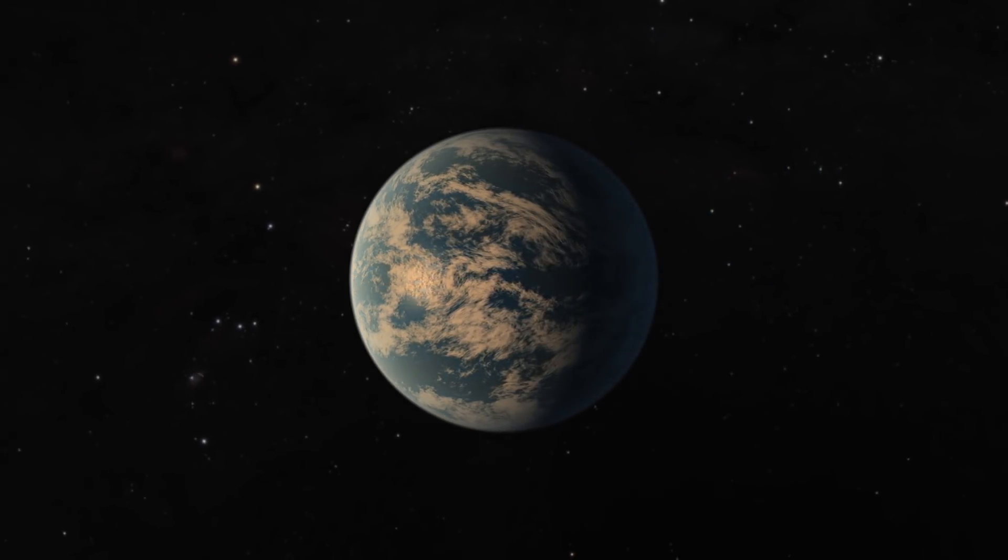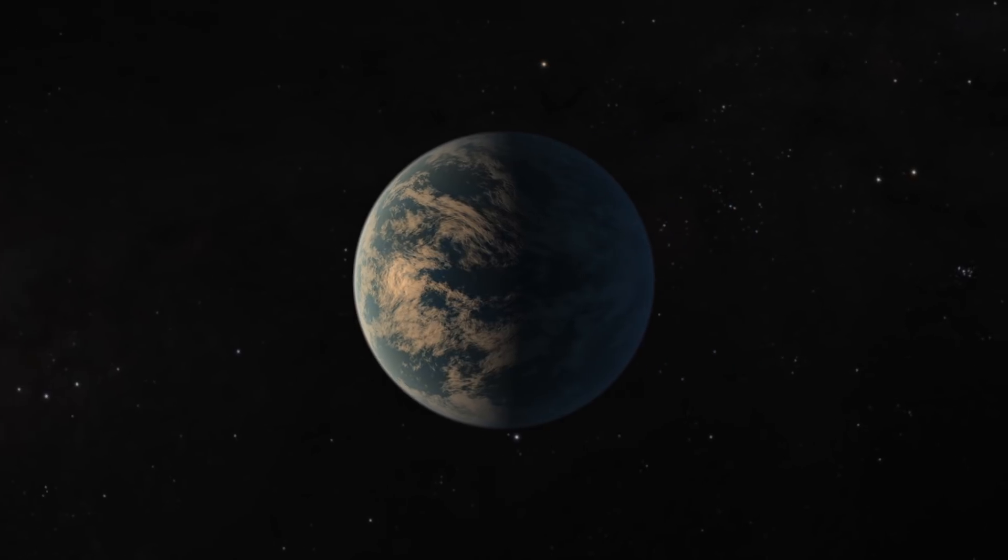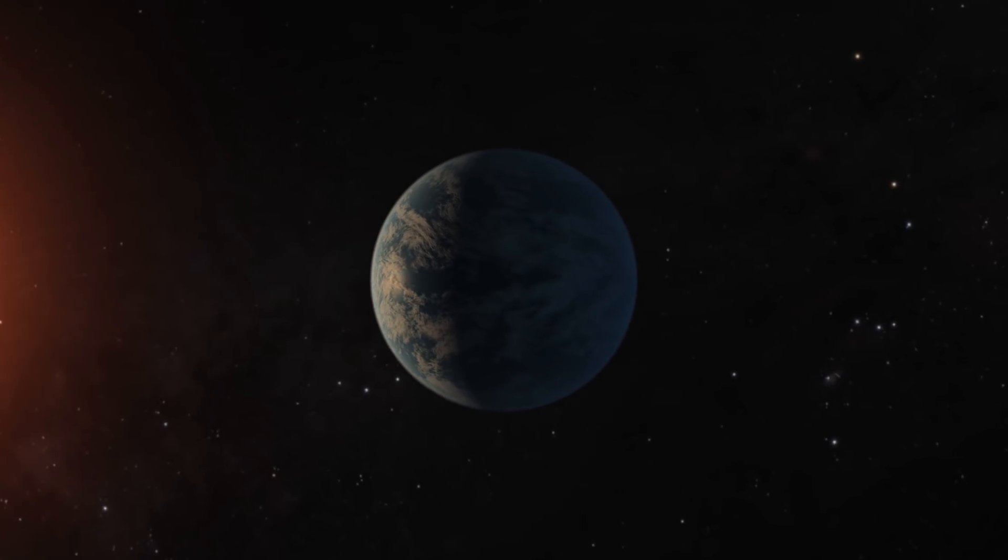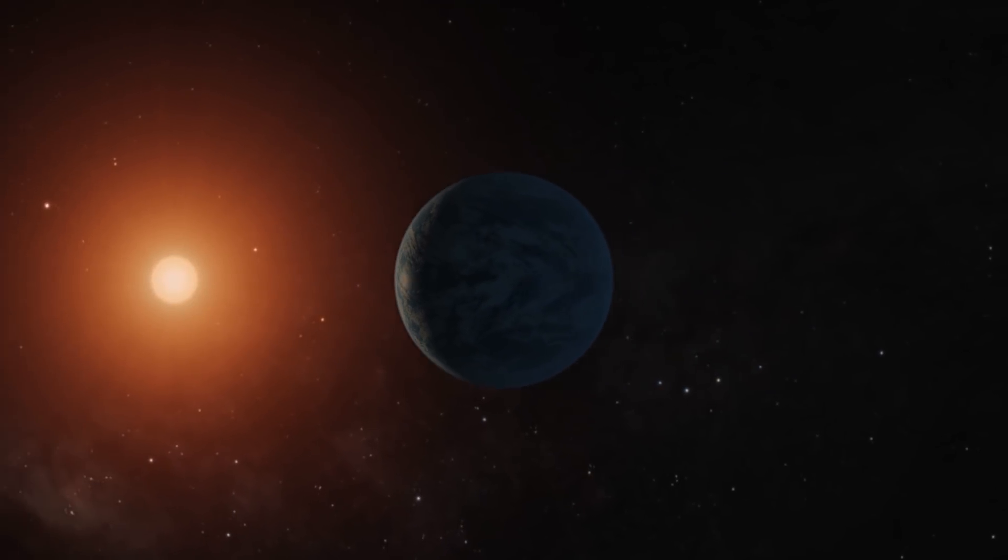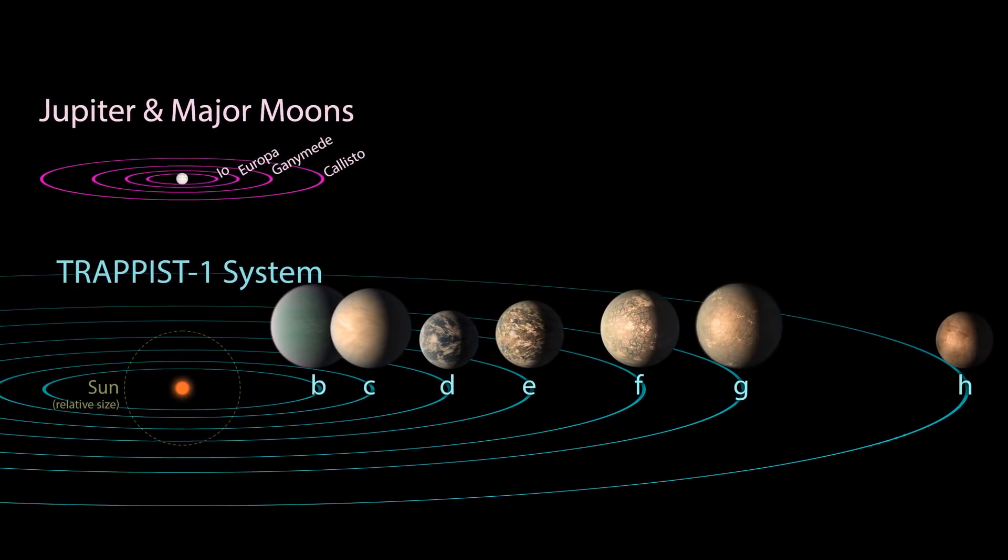But you might wonder, how can we know this about planets we cannot see directly and that orbit an ultracool star 40 light-years away that itself is barely bigger than Jupiter?